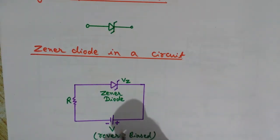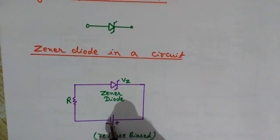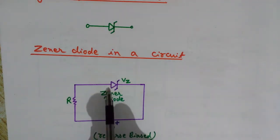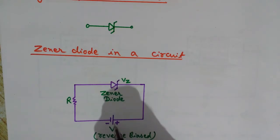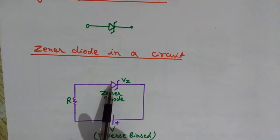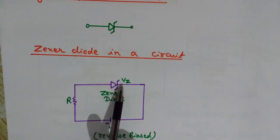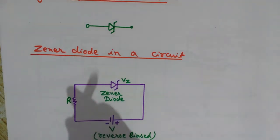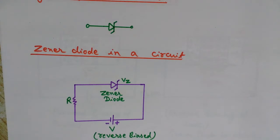Here is the negative terminal of the battery and this one is the positive terminal. The negative terminal has been connected to the P side, and the N side has been connected to the positive terminal of the battery. So the P side is at lower potential compared to the N side — this is reverse biasing. We always use the zener diode in reverse biasing.